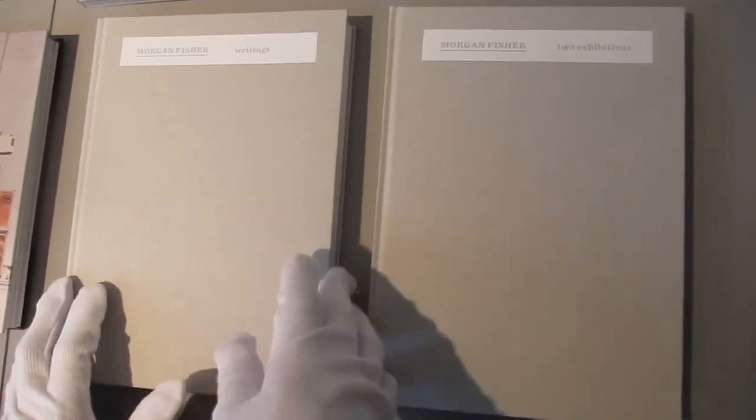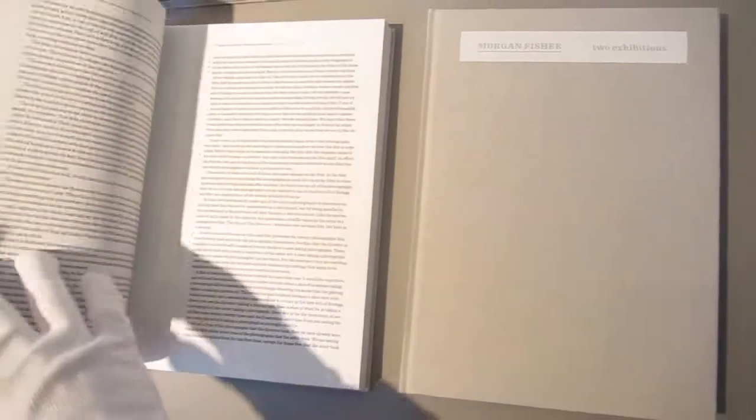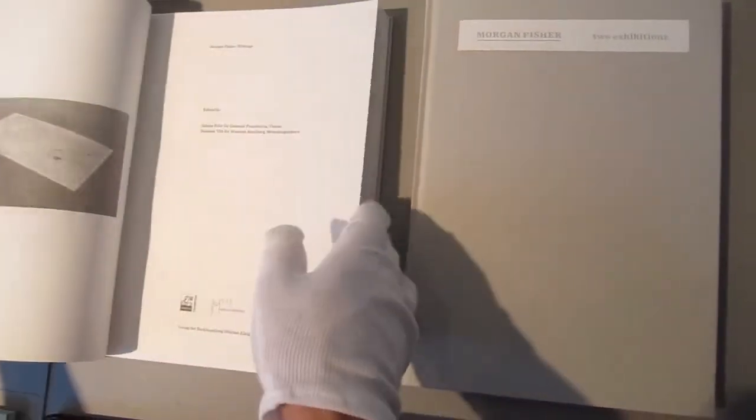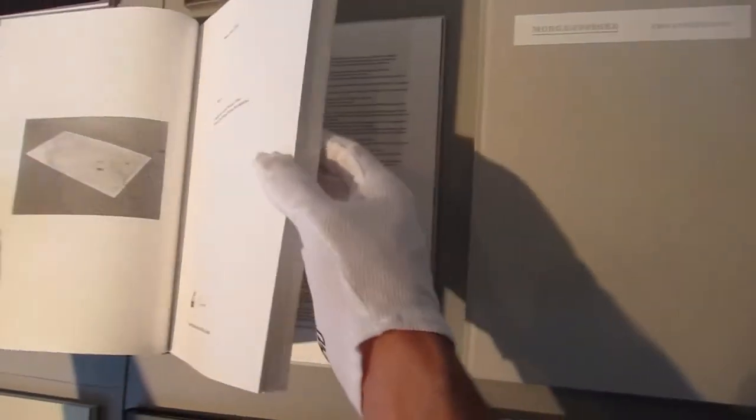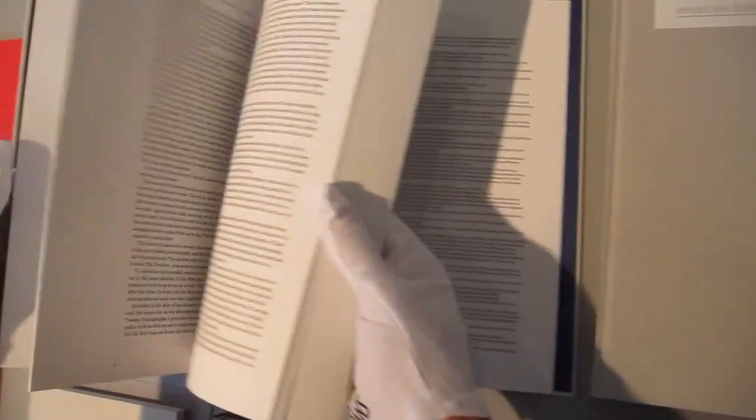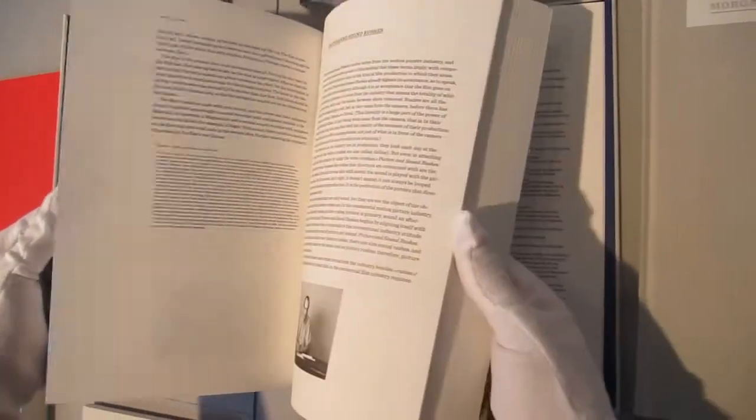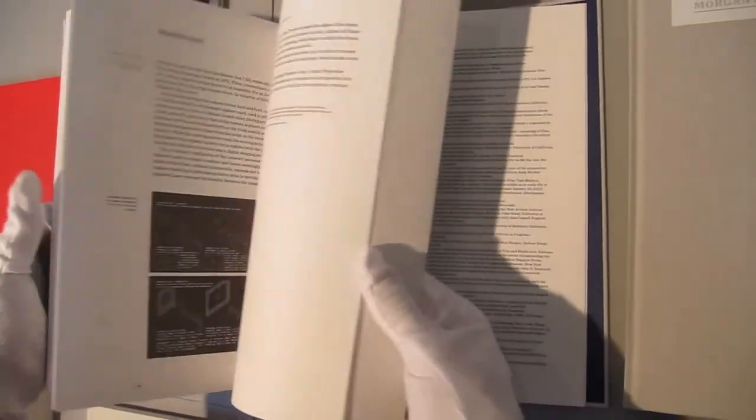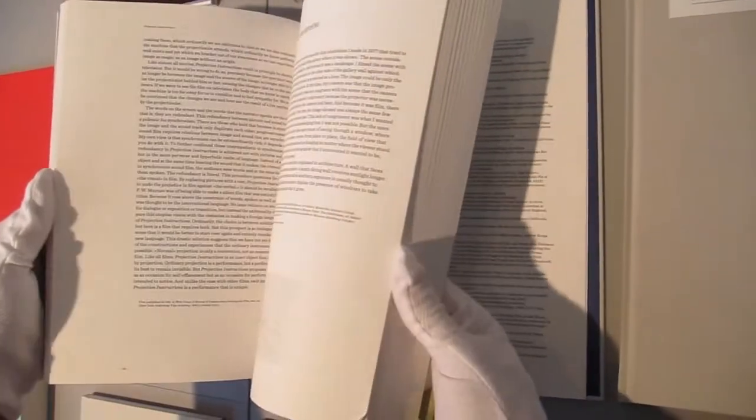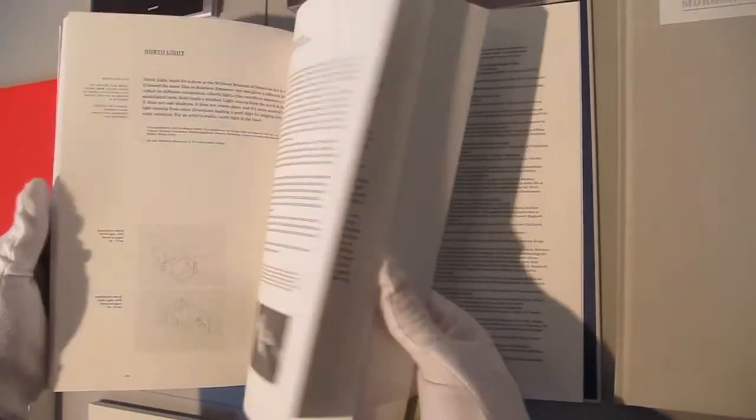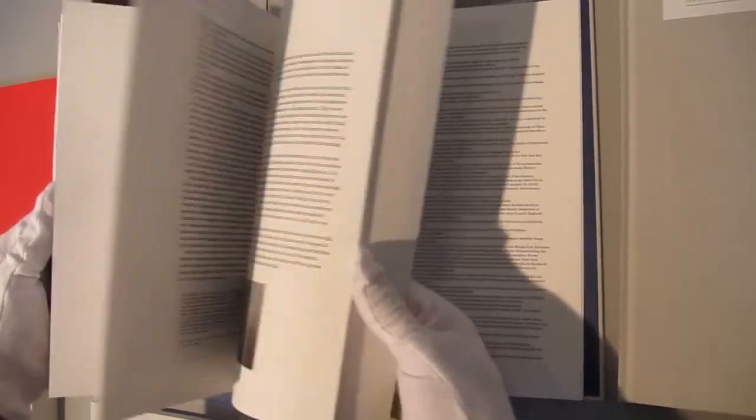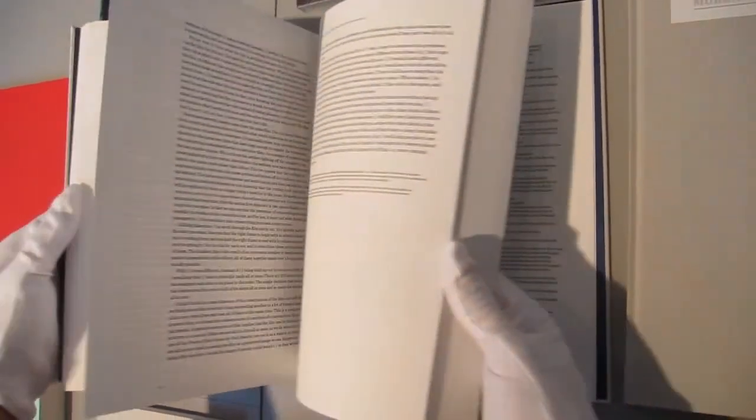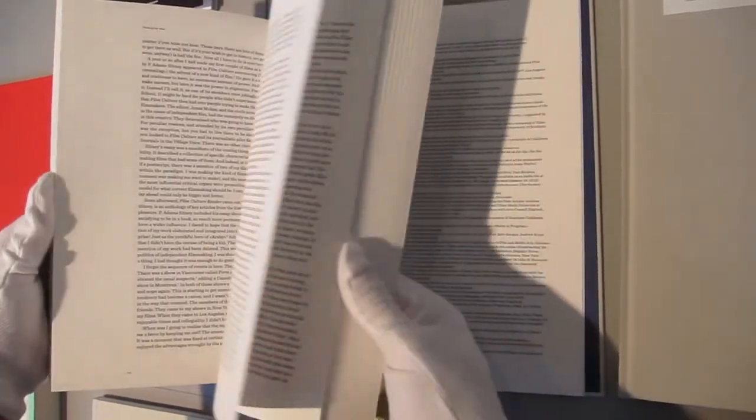One is his writings, which is now first time published. Morgan Fischer of course is an avant-garde filmmaker, very much interested in the medium itself, so very self-reflexive where he is trying to elaborate on the aspect of time for instance in film.